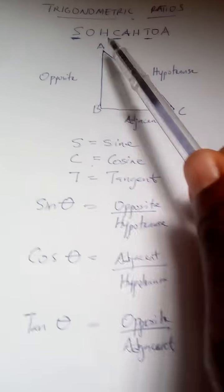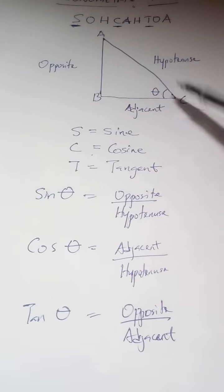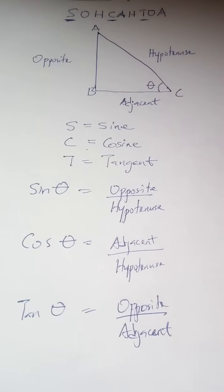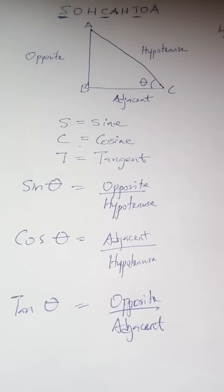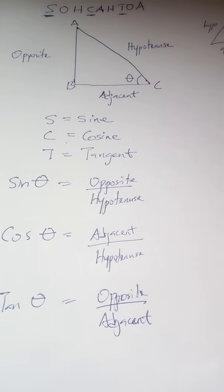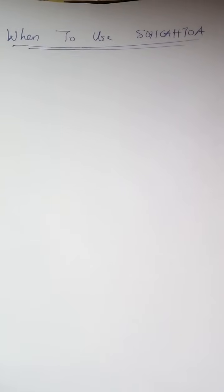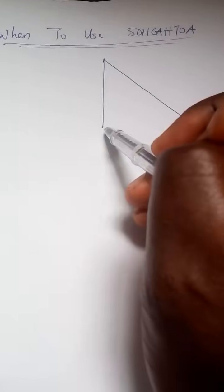If you can just know this, all your problems in angles of elevation and depression will be solved. Once you know SOHCAHTOA and can remember where your hypotenuse, adjacent, and opposite are, you'll be able to solve them all. Now, when are we going to use SOHCAHTOA? How will you know when to use it?